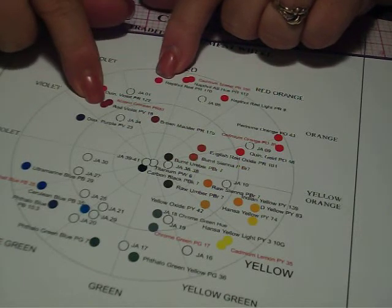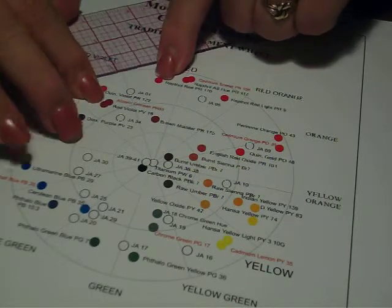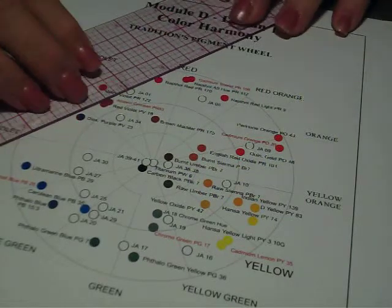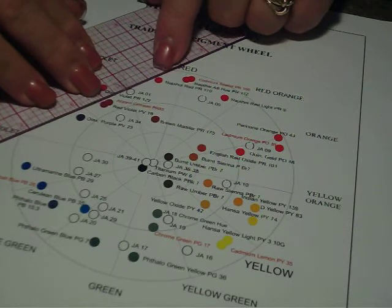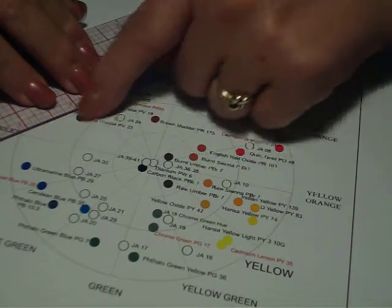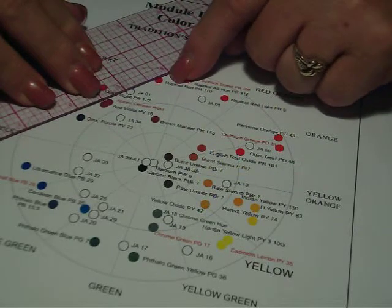Next she talks about red-violet, which is right here on the pigment wheel. And we put our ruler there. You notice that they are both on the outside part of the wheel, so they are both pretty good intensity, not toned.